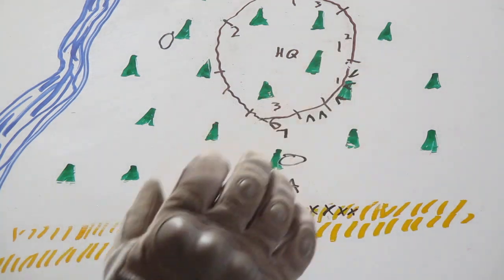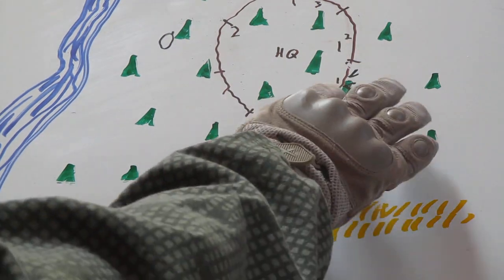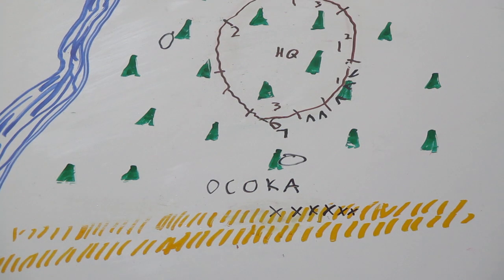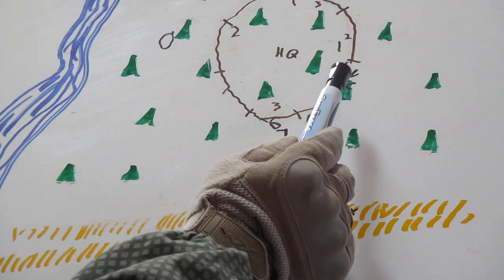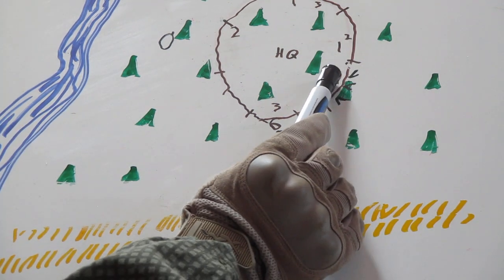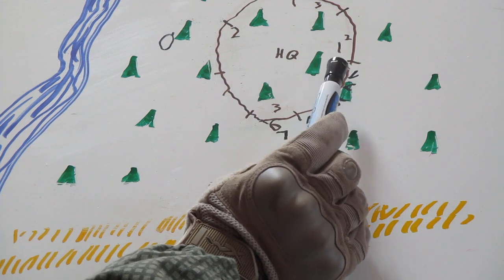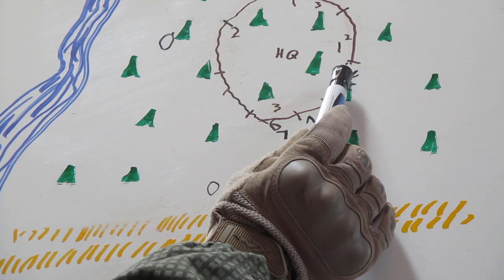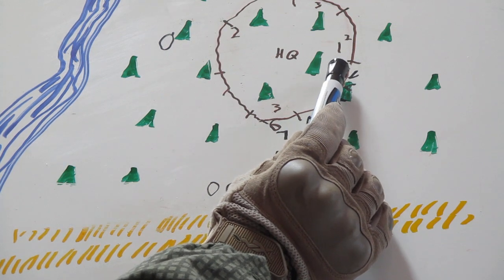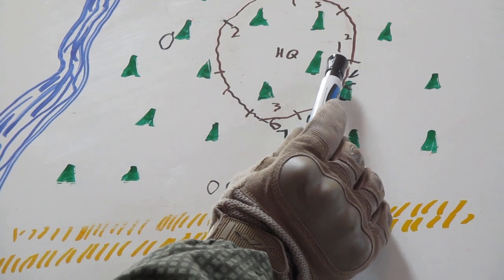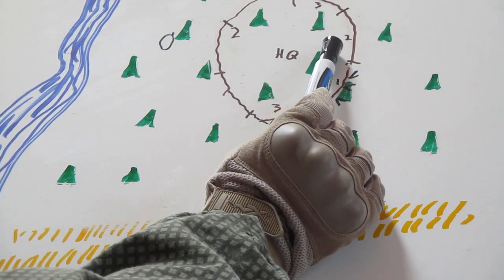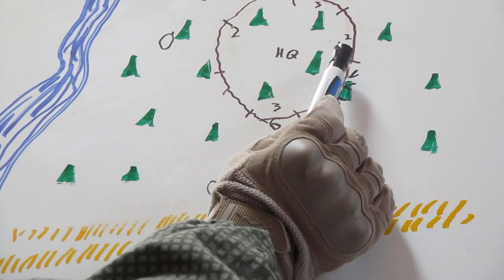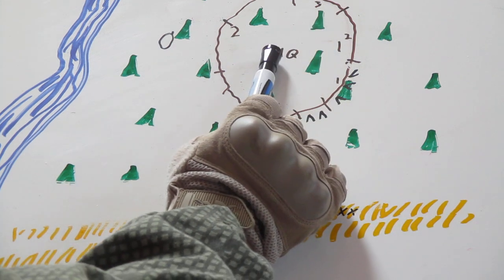Once that's accomplished, each position will write up a range card. That range card, once it is done, a copy of it is given to the squad leader. The squad leader then combines them into a squad sector sketch. The squad leader then gives a copy of the squad sector sketch to the platoon leader. The platoon leader then makes a platoon sector sketch and gives a copy of it to the headquarters.